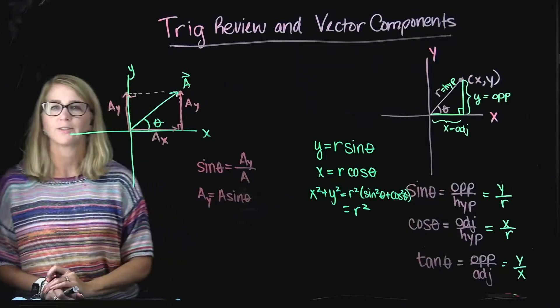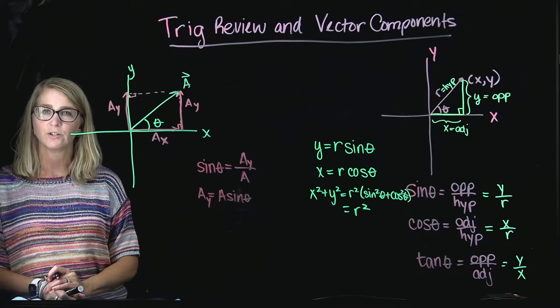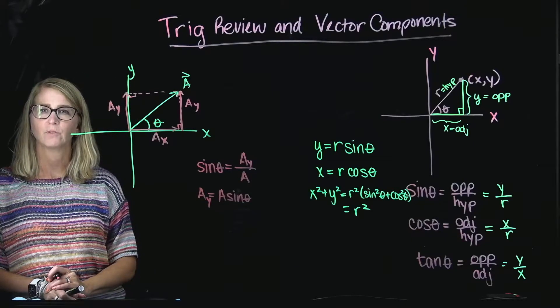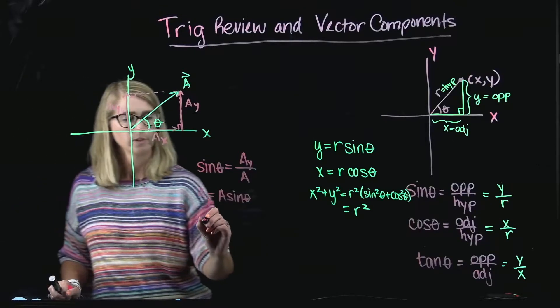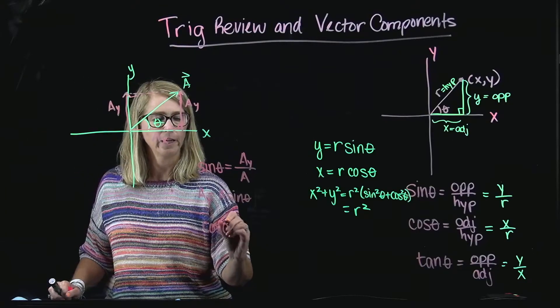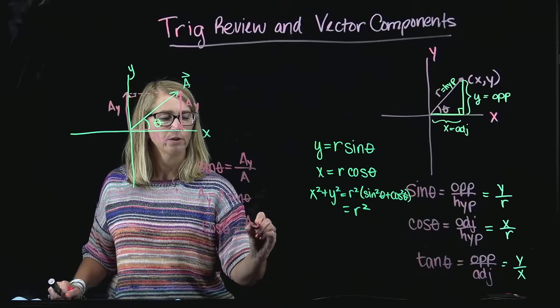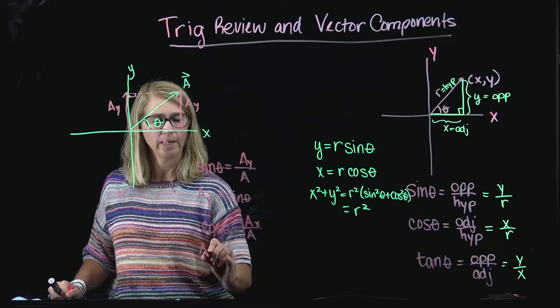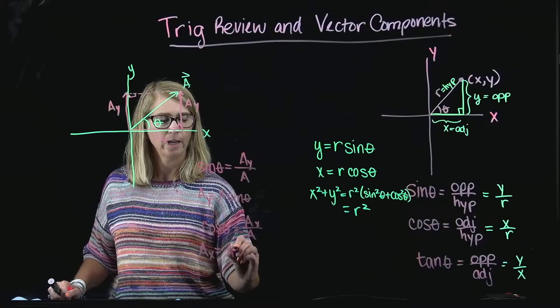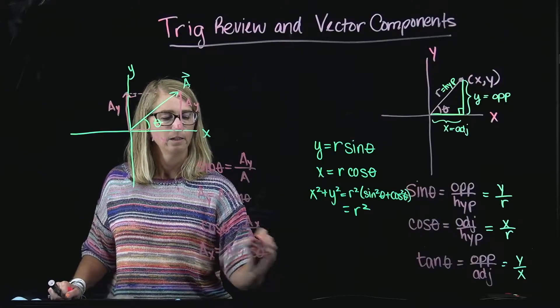When I look at AX, I see that that side is adjacent to the angle theta. So, I immediately want to use cosine. So, cosine of theta is AX over A, and so AX can be written as A cosine theta.